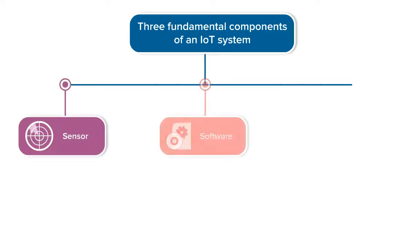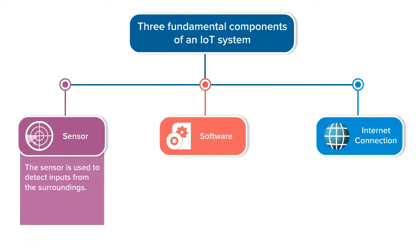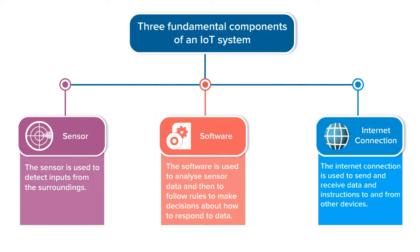The sensor is used to detect inputs from the surroundings. The software is used to analyze sensor data and then to follow rules to make decisions about how to respond to that data. The internet connection is used to send and receive data and instructions to and from other devices.